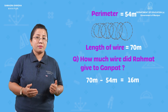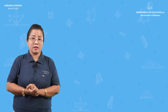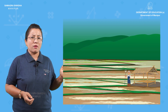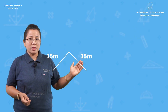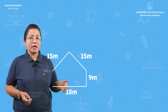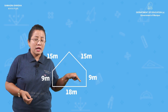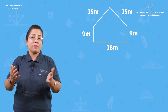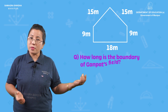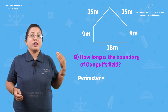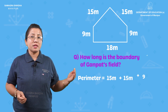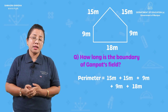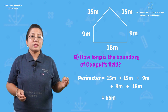Now Gunpat's field — the boundaries of Gunpat's field are 15 meters, 15 meters, 9 meters, 18 meters, and 9 meters. The question asks: how long is the boundary of Gunpat's field? The total perimeter is 15 plus 15 plus 9 plus 9 plus 18, which equals 66 meters.